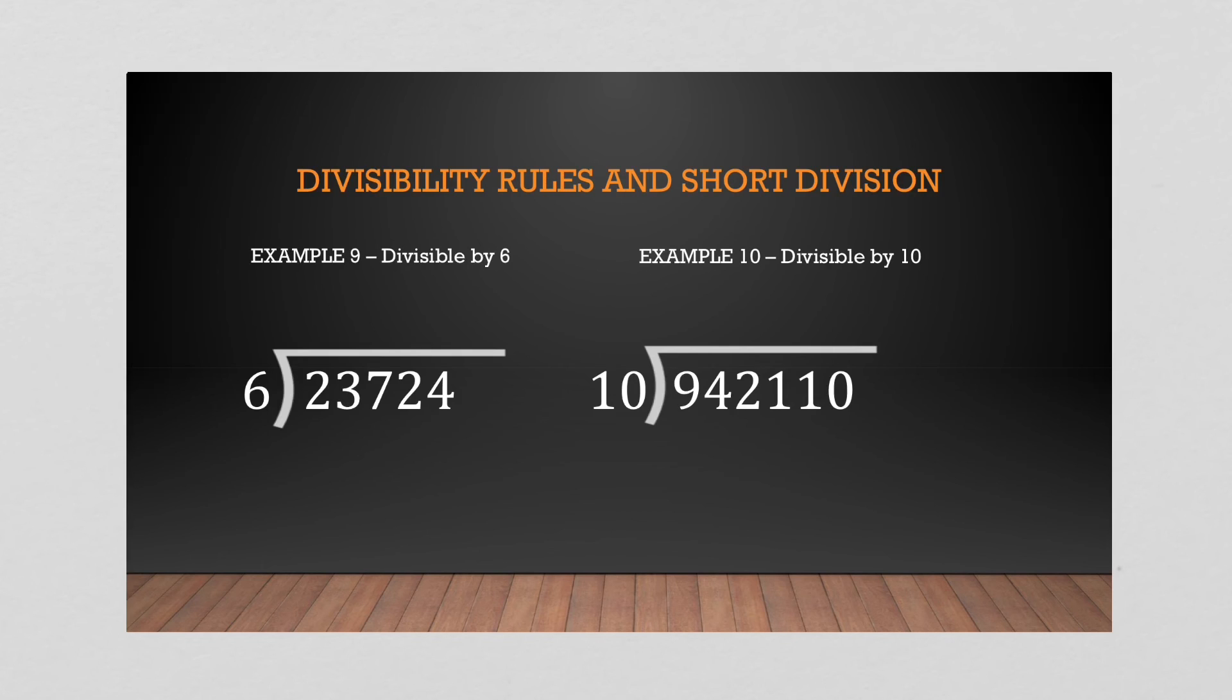Now we've got a divisible by 6, and we've got a divisible by 10. Let's do the 10 first, because it's set up, ends in a 0. 10 goes into 94, 9 times, with 4 remainder. 10 goes into 42, 4 times, with 2 remainder. Goes into 21 twice, with 1 remainder. Goes into 11 once, with 1 remainder. And goes into 10 once.